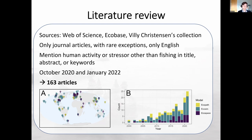Those articles came from all over the world, concentrated in North America and Europe, though that may partly reflect the exclusion of non-English literature. The body of literature has been growing quickly: before 2005, there were only one or two papers per year using Ecopath, Ecosim, or Ecospace to study human impacts from activities other than fishing; in 2021, there were 25 — a tenfold increase. The first big insight is that this area of research is growing really quickly.